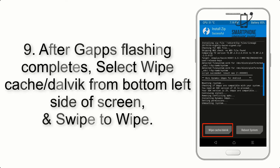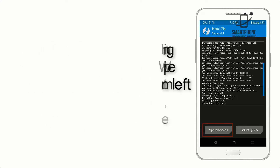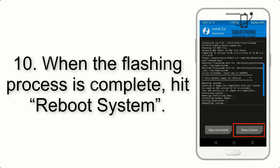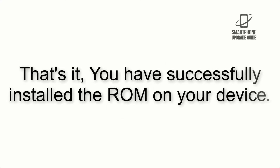Step 8: Flash the GApps zip package in the same manner. Step 9: After GApps flashing completes, select Wipe Cache and Dalvik from the bottom left side of the screen and swipe to wipe. Step 10: When the flashing process is complete, hit Reboot System. That's it — you have successfully installed the ROM on your device.